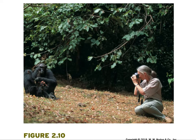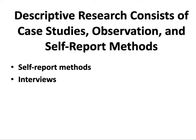Naturalistic observation involves the researcher as a passive observer, making no attempt to change ongoing behavior. An example is primatologist Jane Goodall observing a family of chimpanzees — animals are more likely to act naturally in their native habitats than in captivity. There are also self-report methods, where people provide information about themselves through surveys or questionnaires, and interviews, which can be used with groups such as young children.